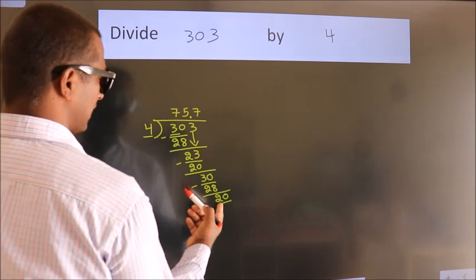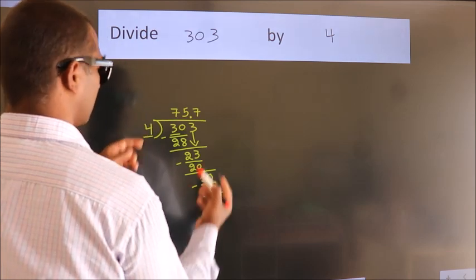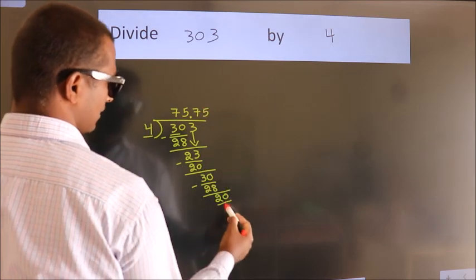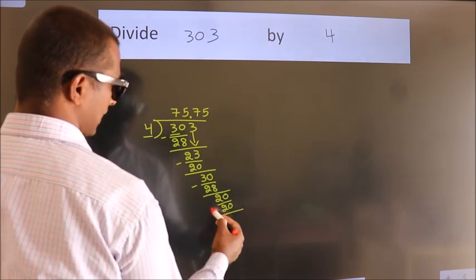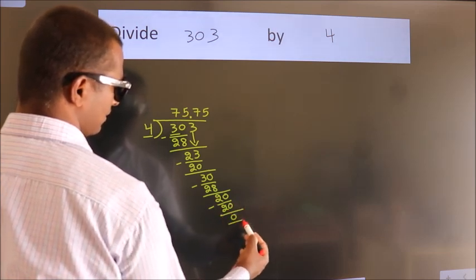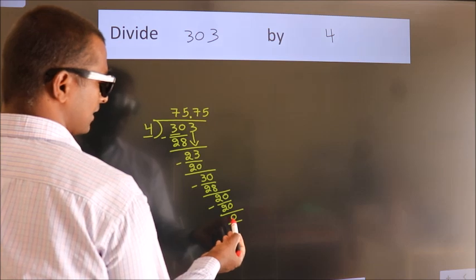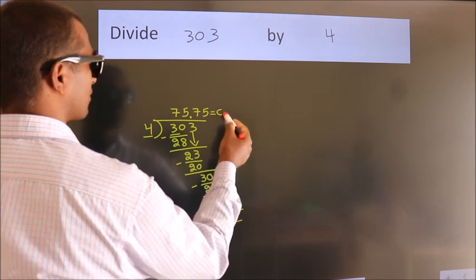When do we get 20 in the 4 table? 4 times 5 equals 20. Now we subtract. We get 0. We got remainder 0, so this is our quotient. Thank you.